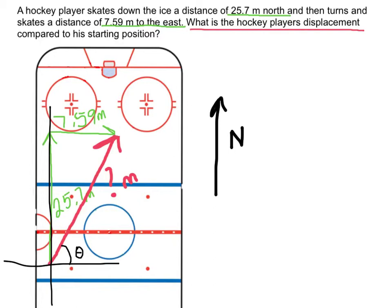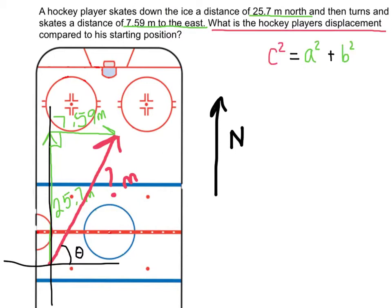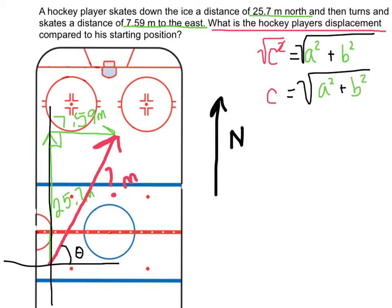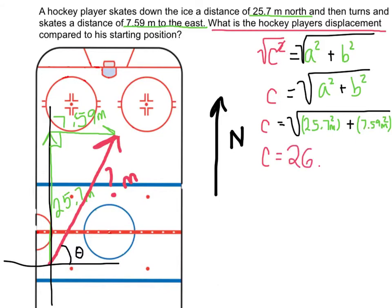Let's start by solving for the red displacement vector using the Pythagorean theorem, since it is the hypotenuse of a right-angled triangle formed by the two component vectors. Taking the square root of both sides: c equals the square root of a squared plus b squared. Plugging in our two known vectors, you can calculate this in your calculator and get 26.8 meters. This is the magnitude — half of our answer — we still need to find the direction.